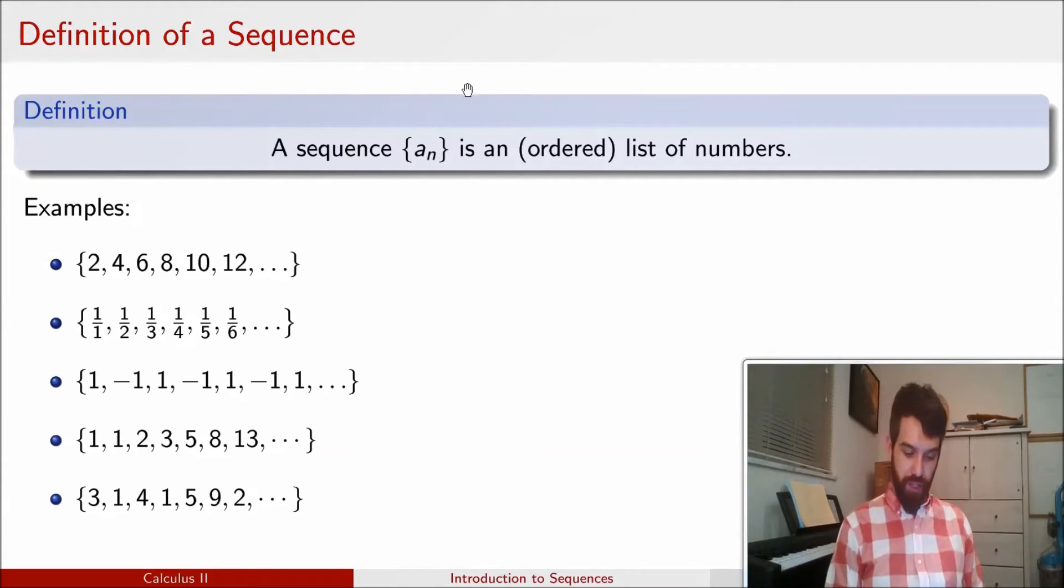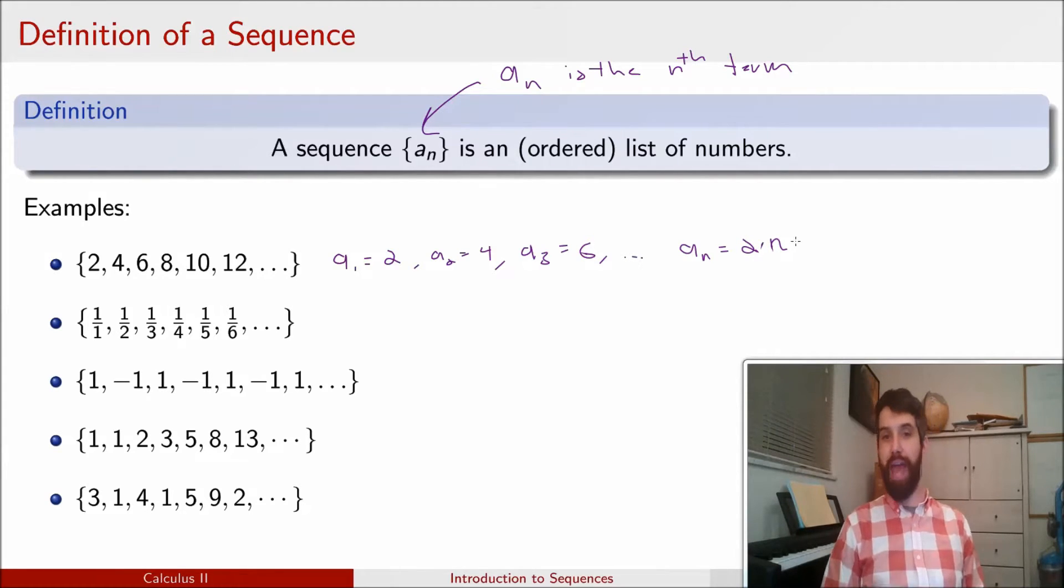Now, the notation that we use for a sequence is given by a sub n. So this a sub n is the nth term. It is the nth term inside of our sequence. So for example, if I look at the first one here, the 2, 4, 6, 8, 10, 12, and so on, one way to just list it is that the first item is going to be 2, the second item is going to be 4, the third item is going to be 6, but I'm already getting tired of that. I want to have a general formula to do it. And in this case, I'm going to say that a_n is just going to be equal to twice the value of n. So for example, if n is 3, then 2 times 3 is 6, and that's that term right there. We have that the third term is just twice times 3.